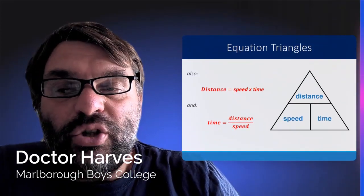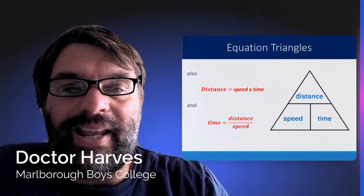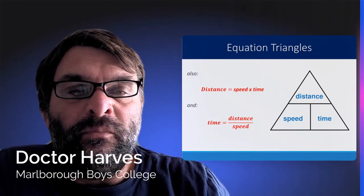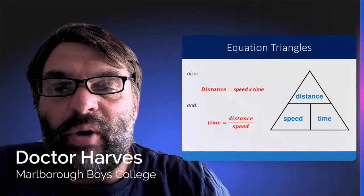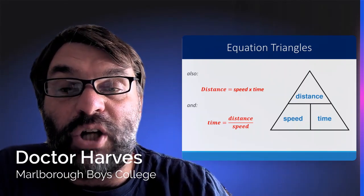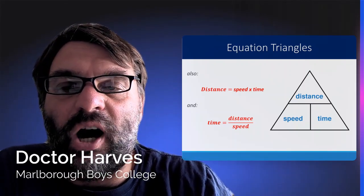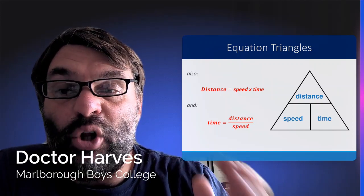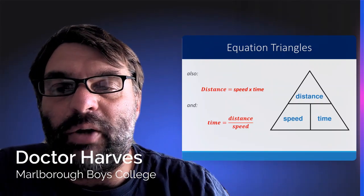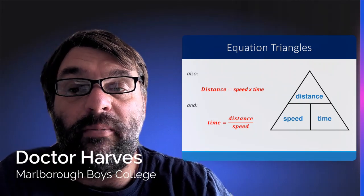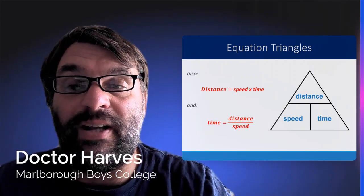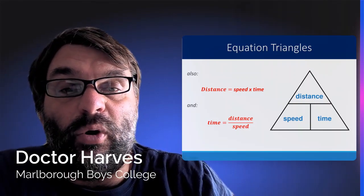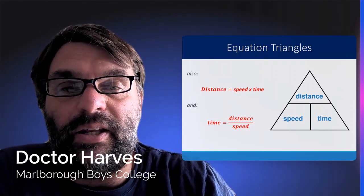So this is where equation triangles come in quite handily. So what that says from the triangle is that distance, if you rearrange the equation, equals speed times time, and time equals distance divided by speed. So you're going to have to learn these equations by rote learning, or maybe the first thing you do in an exam is write down the equation triangle for distance, speed, and time.